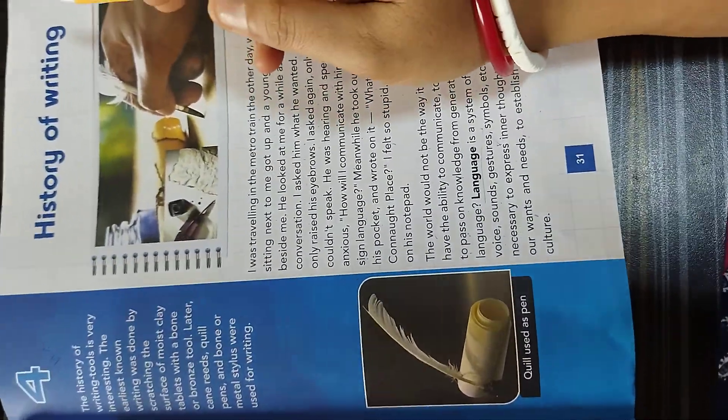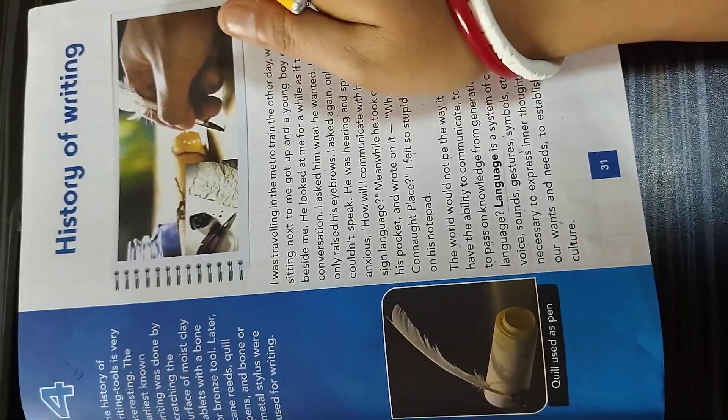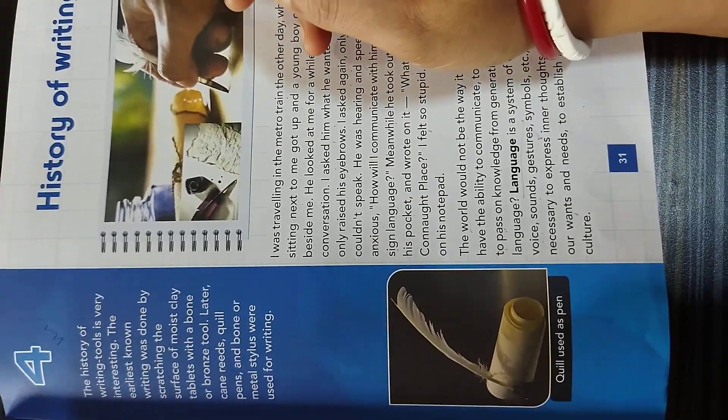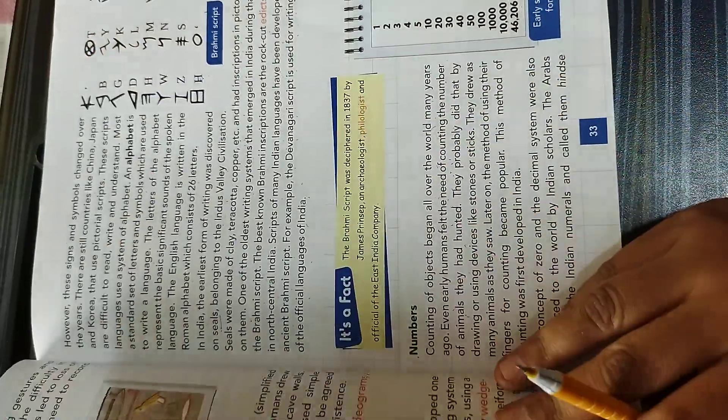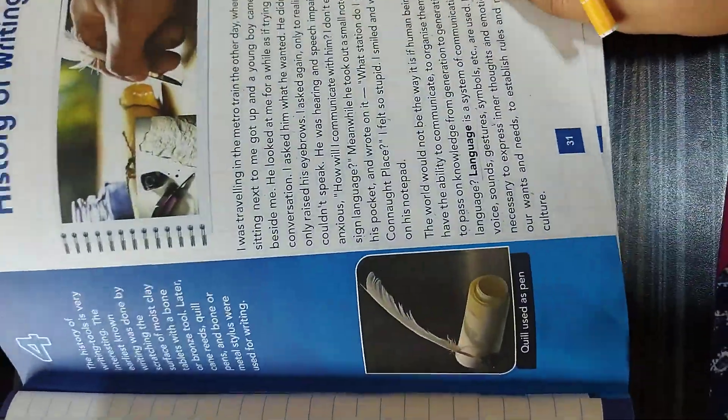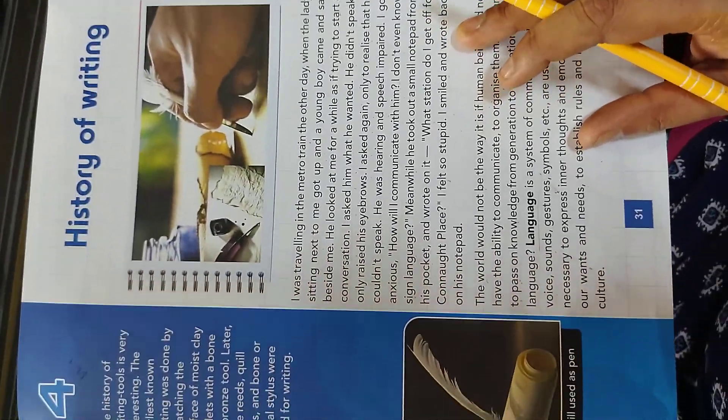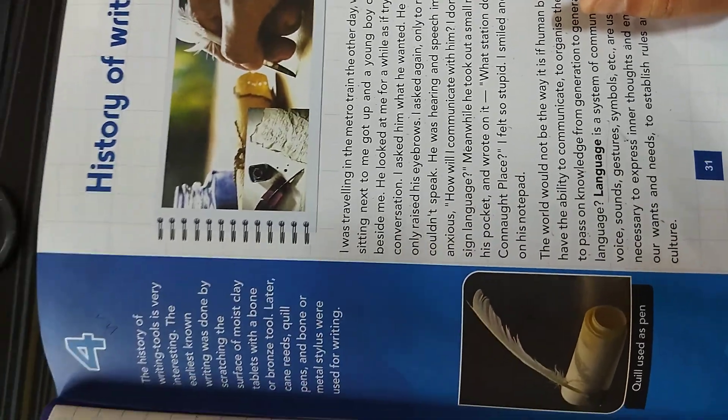So this was the explanation of chapter number 4, History of Writing. Students, I have already explained all the topic with detail with photographs in our live classes. But still, you have to read page number 31, 32, 33, 34 and 35. And if you have any doubt regarding chapter 4, History of Writing, then please contact me or message me. I will solve your problem.